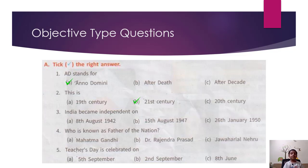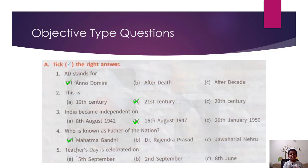Question 3: India became independent on — 8th August 1942, 15th August 1947, 26th January 1950 — so the answer is 15th August 1947. Question 4: Who is known as the Father of the Nation? The answer is Mahatma Gandhi. Question 5: Teachers' Day is celebrated on — 5th September, 2nd September, 8th June — so the answer is 5th September.